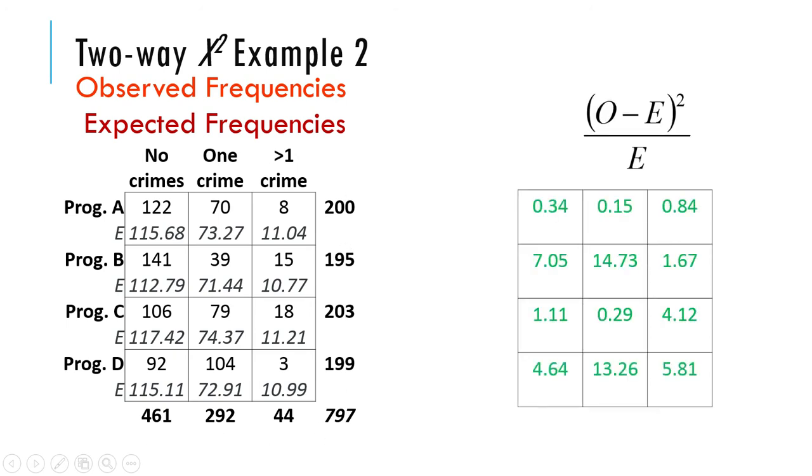Let's figure out the chi-squared components. That's every observed value minus its expected value squared. This first one, 122 minus 115.68, it's going to be kind of a small number. You square that and divide it by 115.68, and you'll get 0.34. Those are the chi-squared components. You do that for each one, add all those things up.